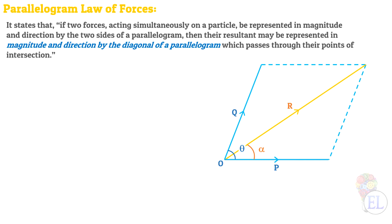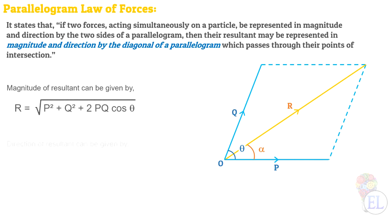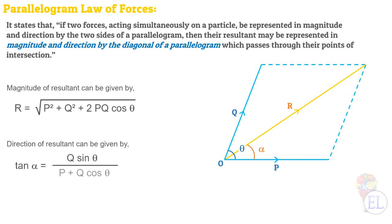The magnitude of the resultant can be given by: R = √(P² + Q² + 2PQ·cosθ). The direction of the resultant is given by: tan α = Q·sinθ / (P + Q·cosθ). That is the brief note on the topic. Now let us move to the MCQs. Remember that all the following questions involve two forces acting on a particle, so we will be applying this law.